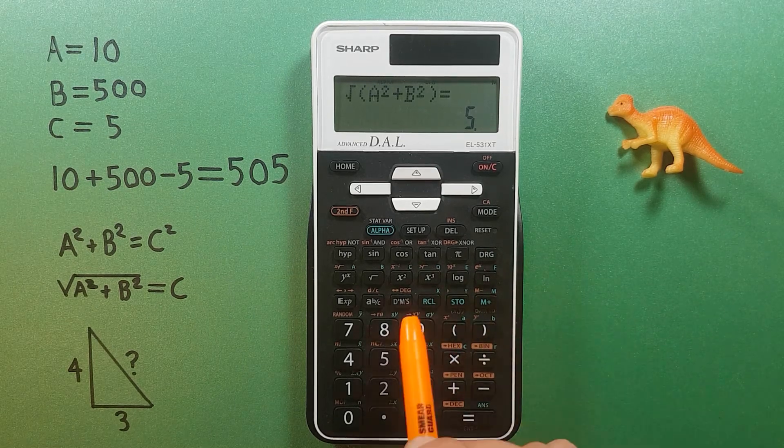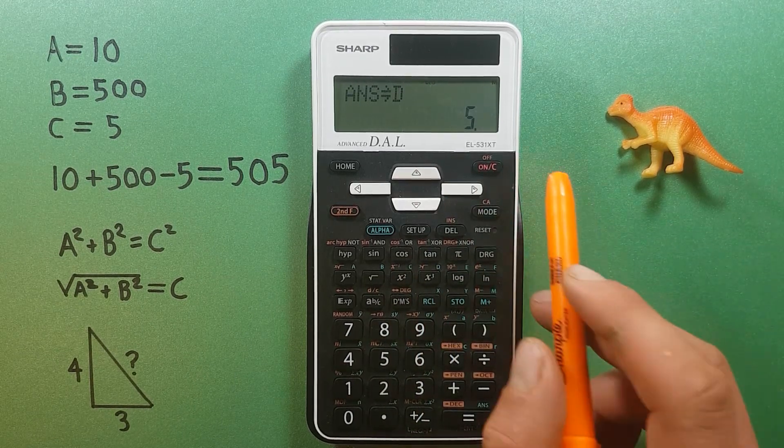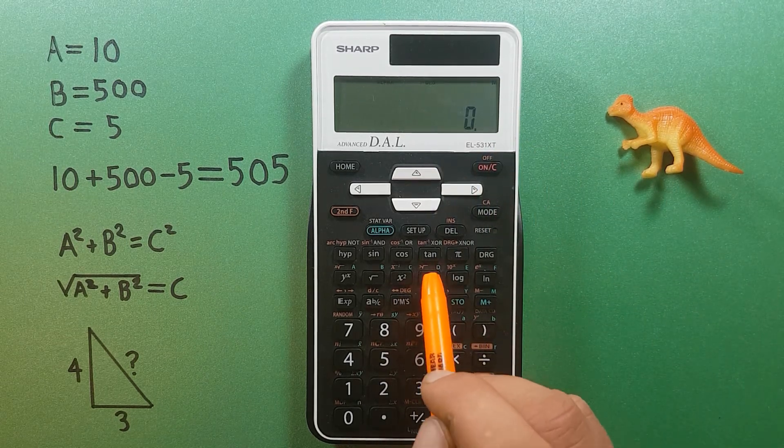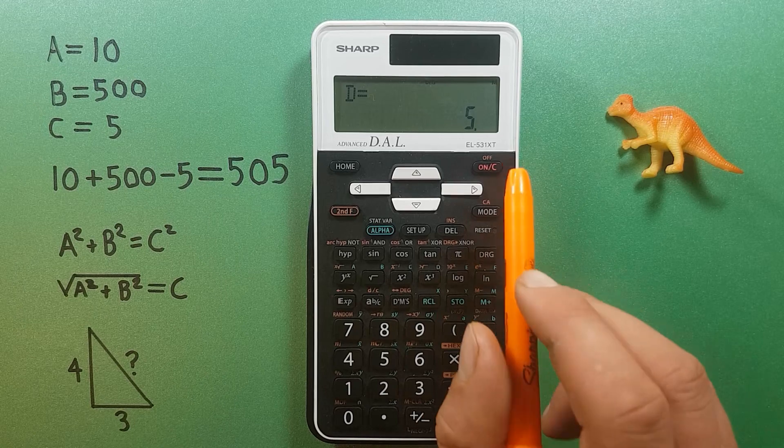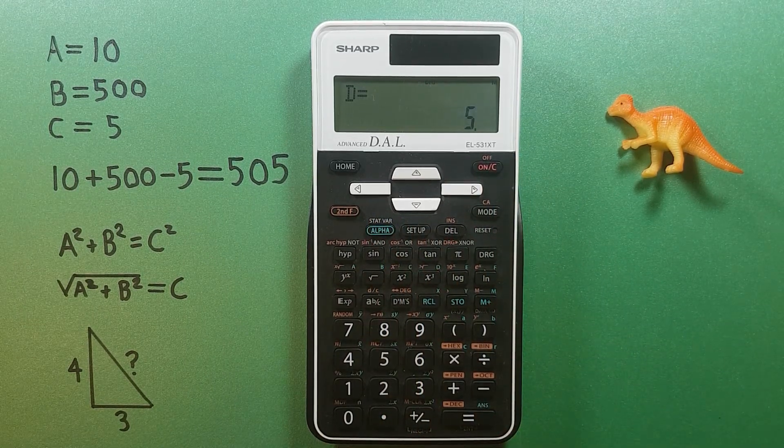And now if you wanted to, we could store this again. Let's store this in D. And if we wanted to bring back that answer again, recall D, or alpha D equals. Either way works fine.